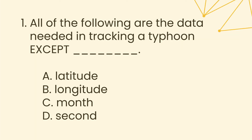Question 1. All of the following are the data needed in tracking a typhoon EXCEPT ___. A. Latitude, B. Longitude, C. Month, D. Second.